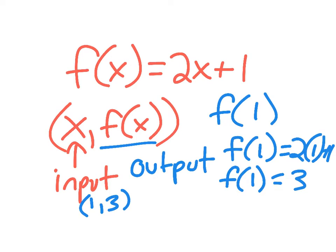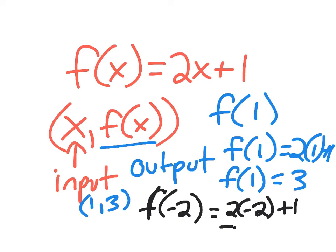I could evaluate this for negative 2. So once again, f of negative 2, what's the value of the function f at negative 2? You're going to substitute negative 2 in for x. So we have 2 times negative 2, negative 4, plus 1, I get negative 3 back out. So negative 2 is going in, negative 3 is coming back out.